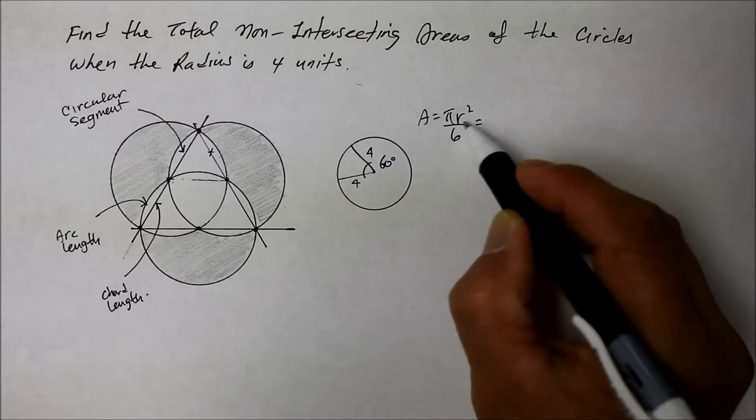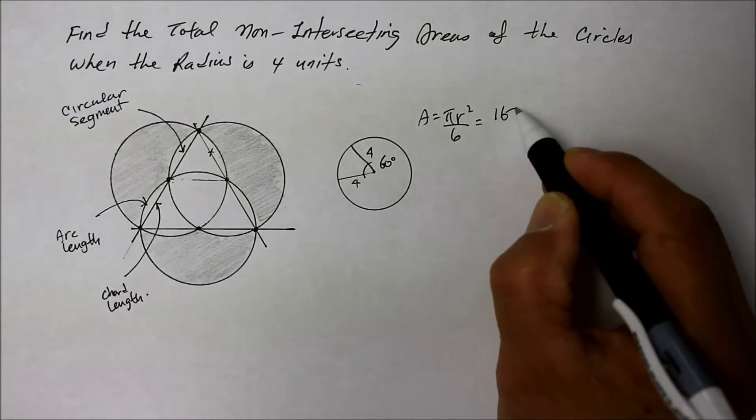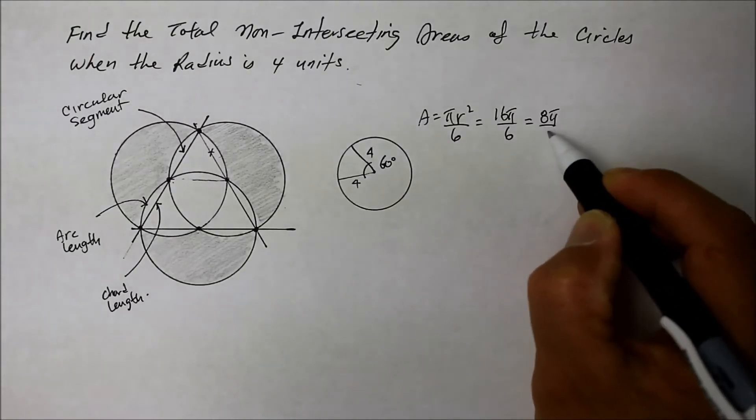And so that's going to become, well, the radius is 4. So 4 squared is 16. So that's 16 pi over denominator 6, which reduces to 8 pi over 3.